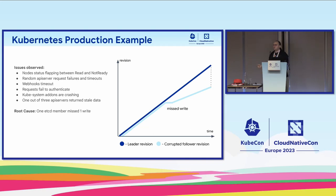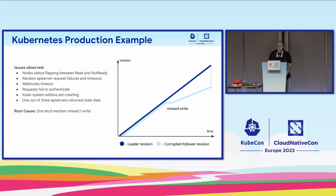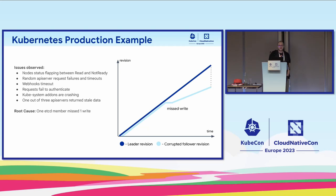As you can see on the graph, missing one write can cause the revision of etcd to totally diverge. This is because of how Kubernetes uses etcd — its revision is pretty crucial for Kubernetes correctness. Revision is like a global counter for each change happening in the cluster, and it is used by Kubernetes for optimistic concurrency control.